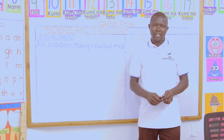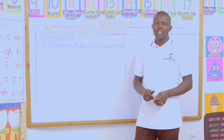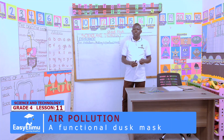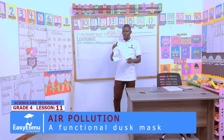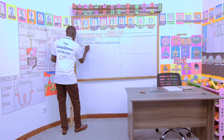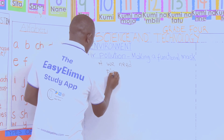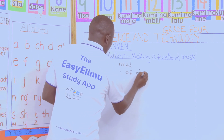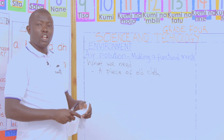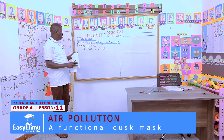How do we make a mask? Before we make a mask, I requested you, class, to bring the following. A piece of old cloth. That is one material that we need. Remember, the functional mask we are making uses locally available materials — there is no need to buy. A piece of old cloth, new or old, just bring any piece.